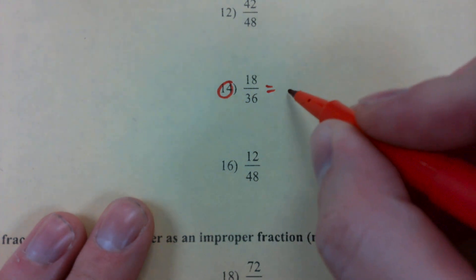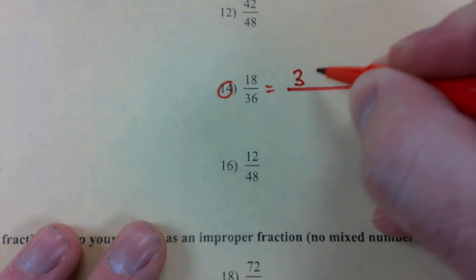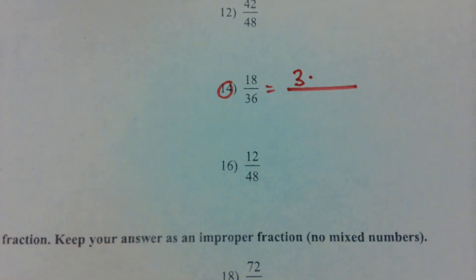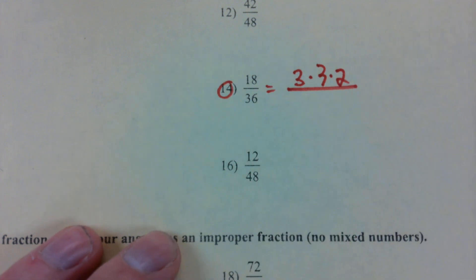So we'll start with eighteen. Who can tell me what two numbers multiply to give me eighteen? Tina? Six and three. Perfect. Three times six. Now, can we split six up even further? Yeah, we can, right? Six is three times two. Three times three is nine, times two is eighteen. It works both ways, right?